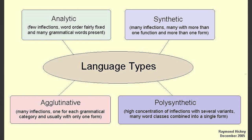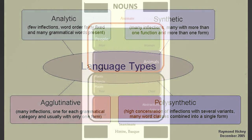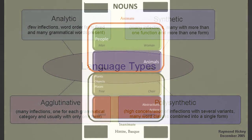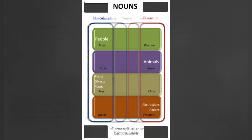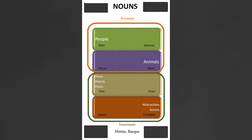Then you have synthetic or polysynthetic languages, which are really complicated and incorporate all of these things to lesser and greater degrees. A lot of Native American languages are like this; Inuit is like this; Basque, this strange language isolate in Europe, is like this. But Old English is basically an inflected language — it's not that complicated, but in terms of its morphology it's a fair bit more complex than Modern English.